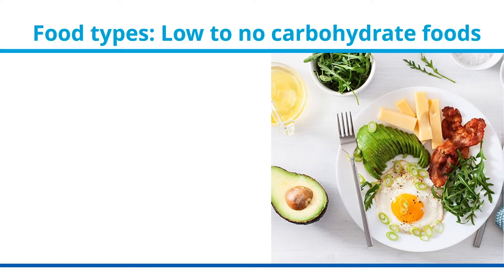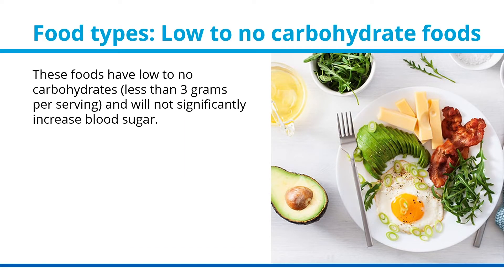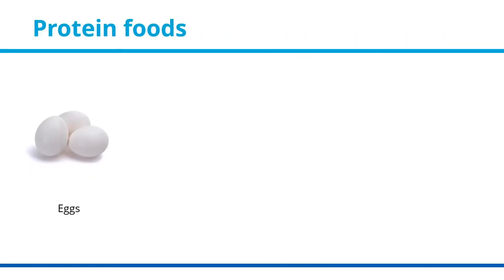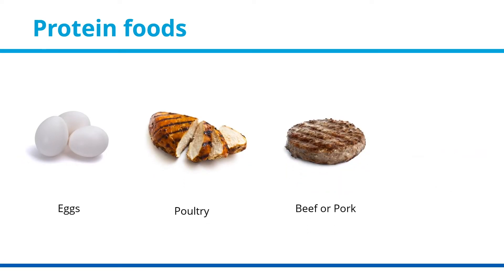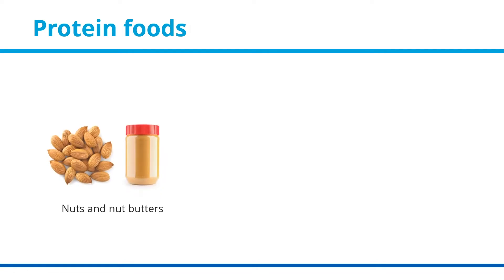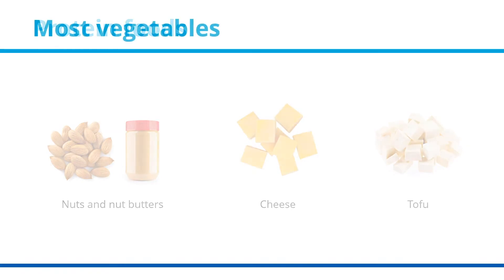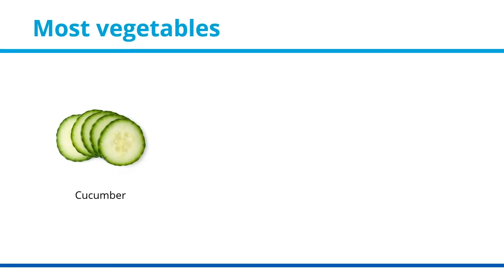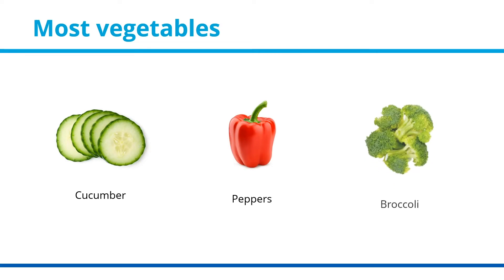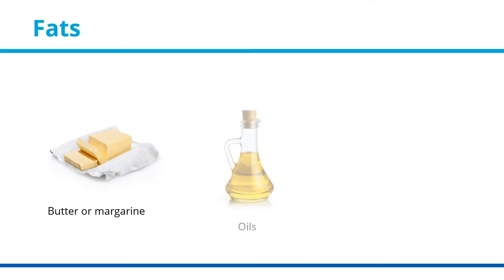Non-carbohydrate foods have low to no carbohydrates — less than 3 grams per serving — and will not significantly increase blood sugar. You can eat these foods at any time. They include protein foods such as eggs and meats like poultry, beef, pork, or fish, and nuts and nut butters like peanut butter, also cheese and non-animal proteins like tofu, although some non-animal proteins may contain more carbohydrates. Low to no-carbohydrate foods also include vegetables such as cucumber, peppers, and broccoli, and fats such as butter, oils, and avocado.